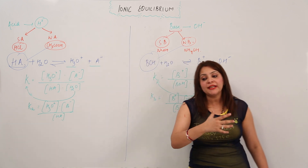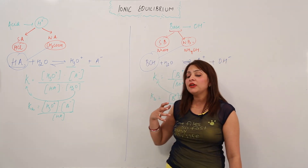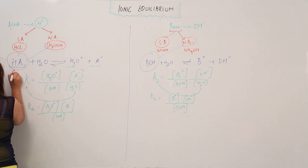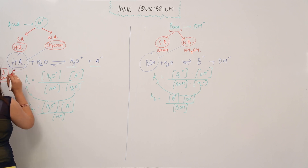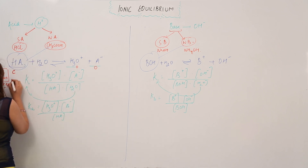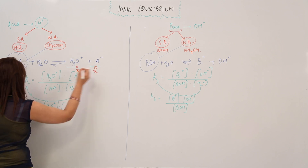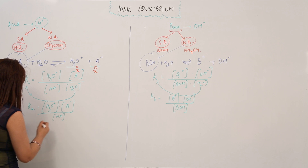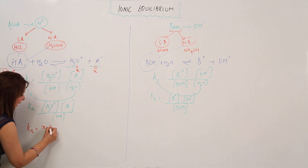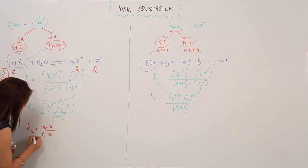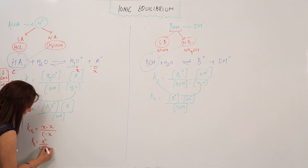Now we want to know how much it gets dissociated. If we wish to know about the degree of dissociation, we consider some initial concentration. Suppose initially, HA has concentration C, and the products H₃O⁺ and A⁻ are both 0. At equilibrium, the product concentrations become X and X, and the concentration of HA is C − X. Putting these values into the Ka expression: Ka = X × X / (C − X), which gives Ka = X² / (C − X).